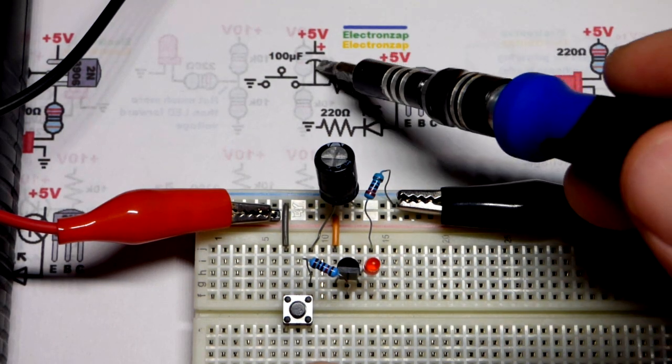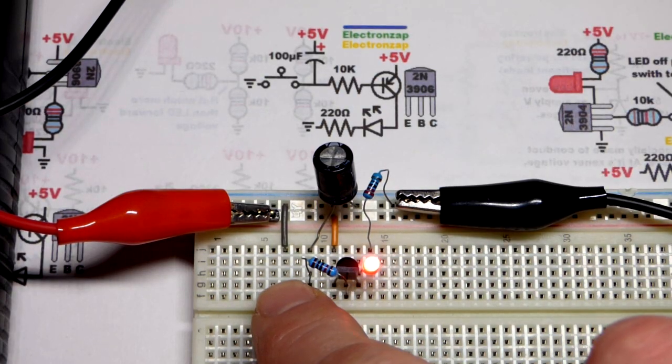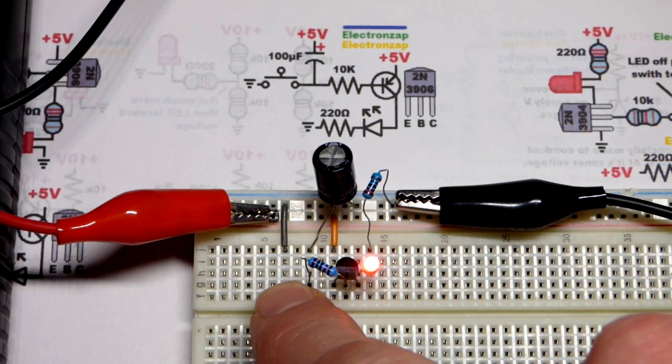So now, with just a capacitor, 100 microfarad is probably about as big as you want to go because you do short it right when you close the switch.